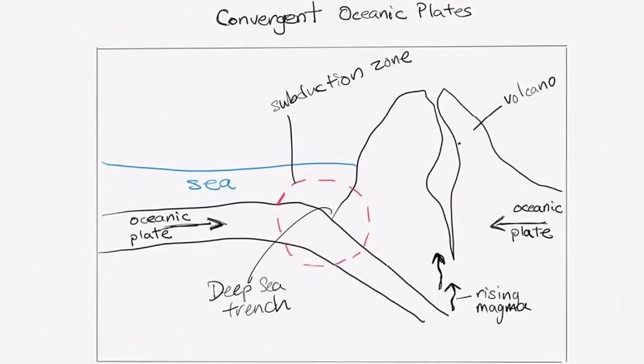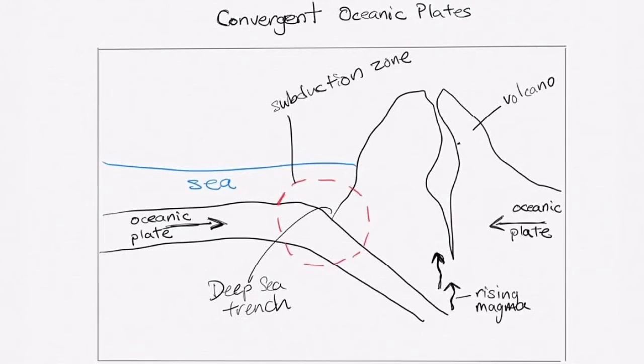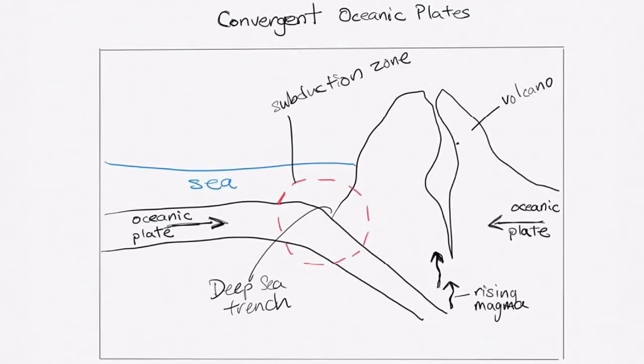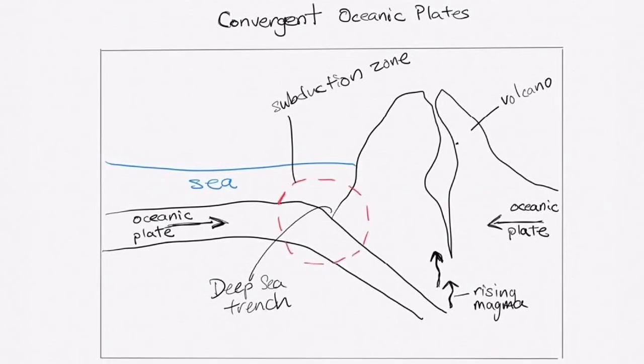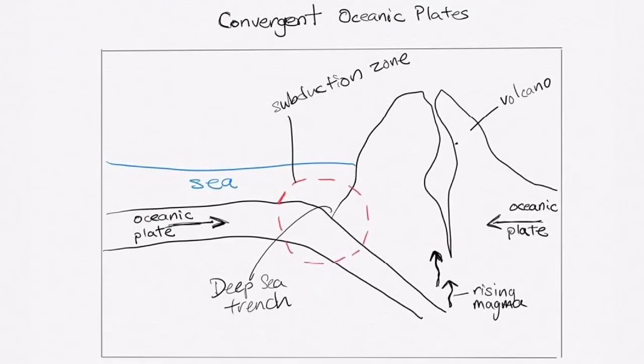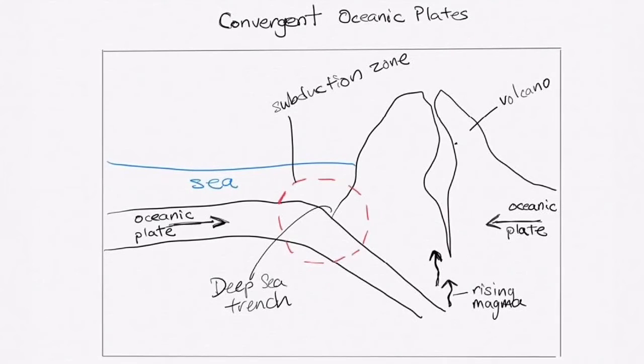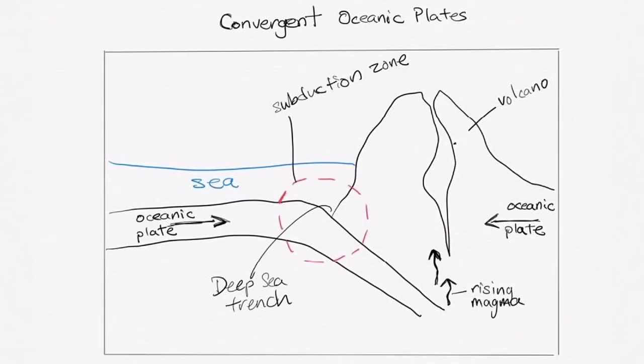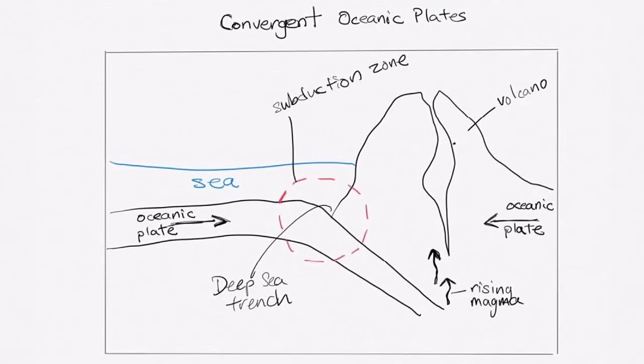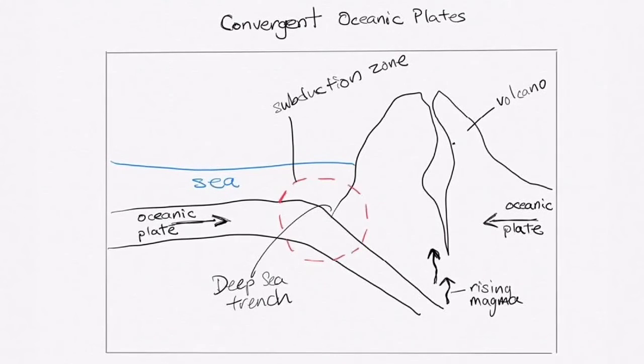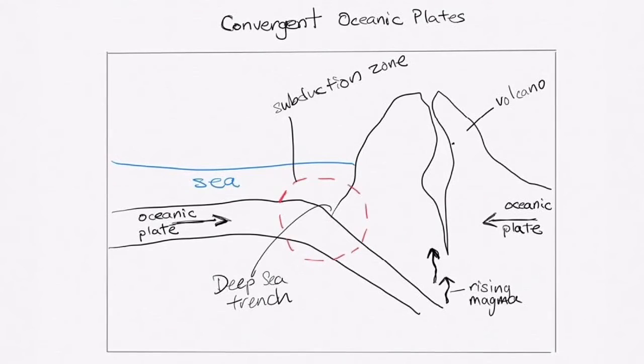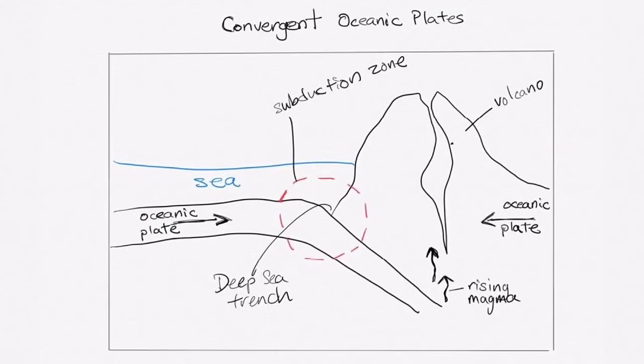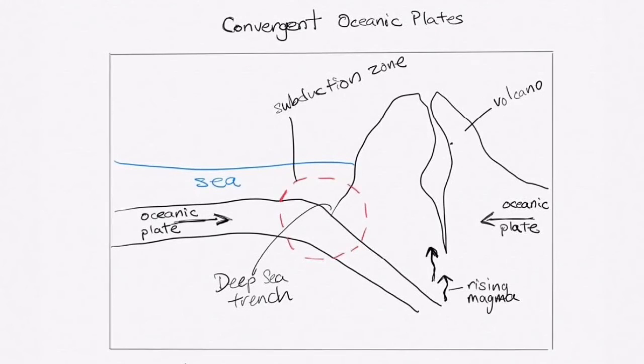In this particular case here, we would require you to include the following things: rising magma as a result of the oceanic plate that has been subducting, melting and rising up through cracks forming volcanoes. The formation of the volcano itself on the oceanic plate that is folding as a result of the subduction. You need to also indicate the presence of the deep sea trench, the subduction zone.